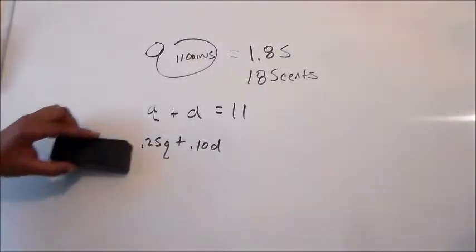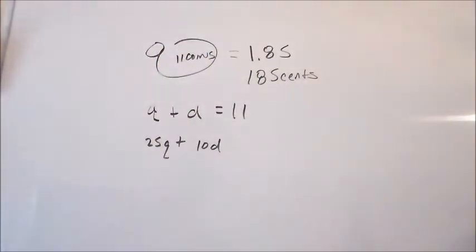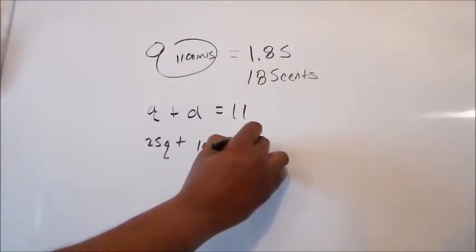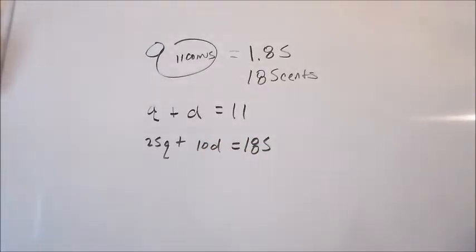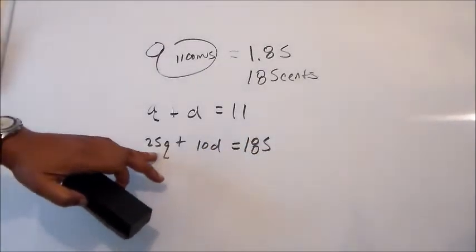So 25q plus 10d, and we're solving in just plain old cents. So we'll leave the decimal out of there and we'll just say 185 cents. So 25 cents is assigned to the quarters, 10 cents is assigned to the dime.